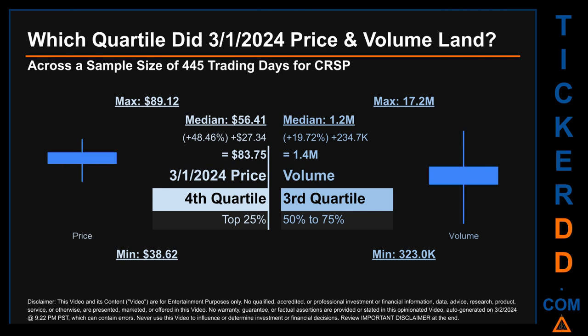The day's volume landed within the third quartile, that is within the 50 to 75% range of all sampled daily volume, which saw a max daily volume of 17.2 million and a minimum of 323,000. Quartiles tell us about the spread of a data set by breaking that data set into quarters, just like how the median breaks the set into half. Descriptively, CRSP has a median price of $56.41; therefore the 1st of March, 2024, price was higher from that middle marker by 48.46%. The day's volume of 1.4 million was more than the median by 19.72%.